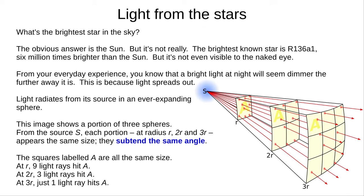What's the brightest star in the sky? Most people would say the Sun. Some might say Sirius, but it's a bit more complicated than that. The brightest known star is R136A1, six million times brighter than the Sun. But it's not even visible to the naked eye.